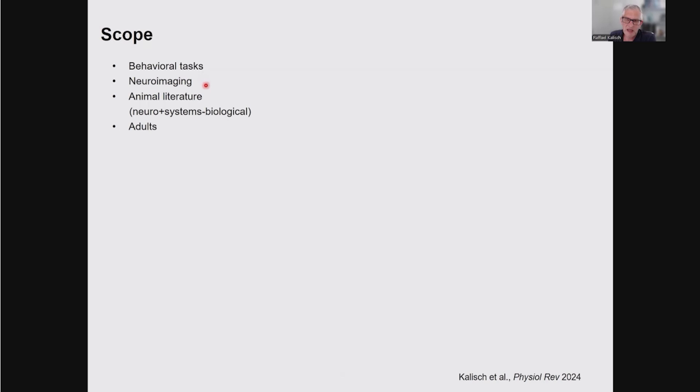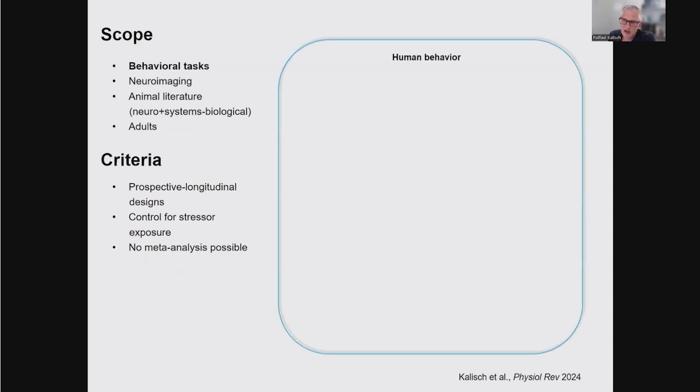The scope of our article is the behavioral literature, the task literature, because that also tells you something about the brain. Then the human neuroimaging literature and the animal literatures about neurobiological and systems biological mechanisms. We have limited ourselves to looking at adults only. Methods criteria were that we wanted to look at specifically prospective longitudinal studies with control for stressor exposure. I can tell you there were not so many, so meta-analyses were not possible for us.